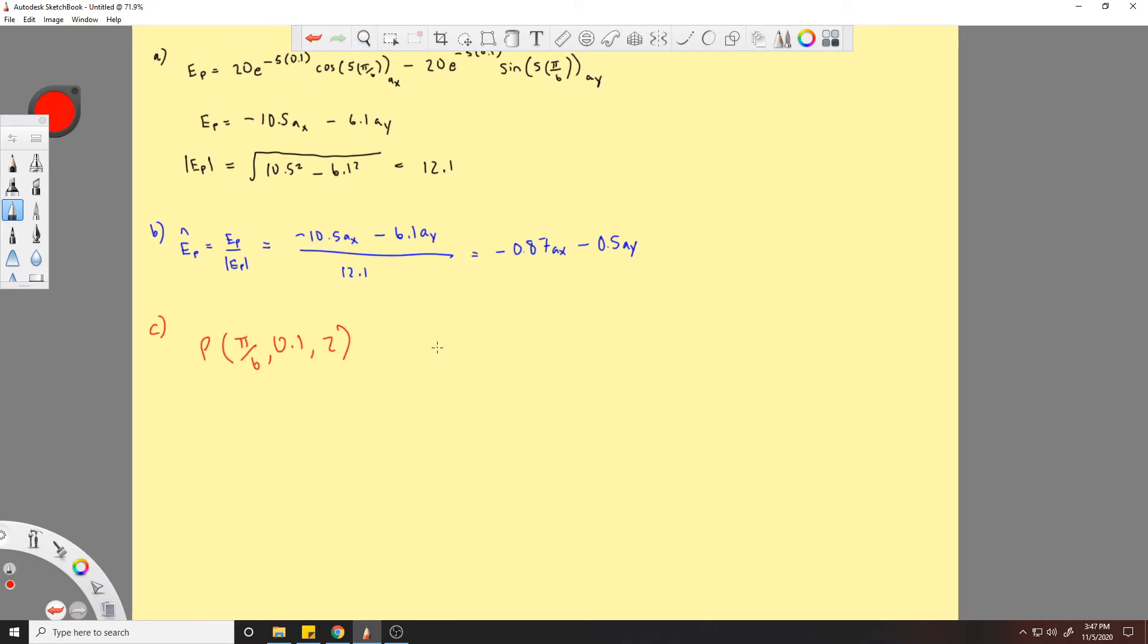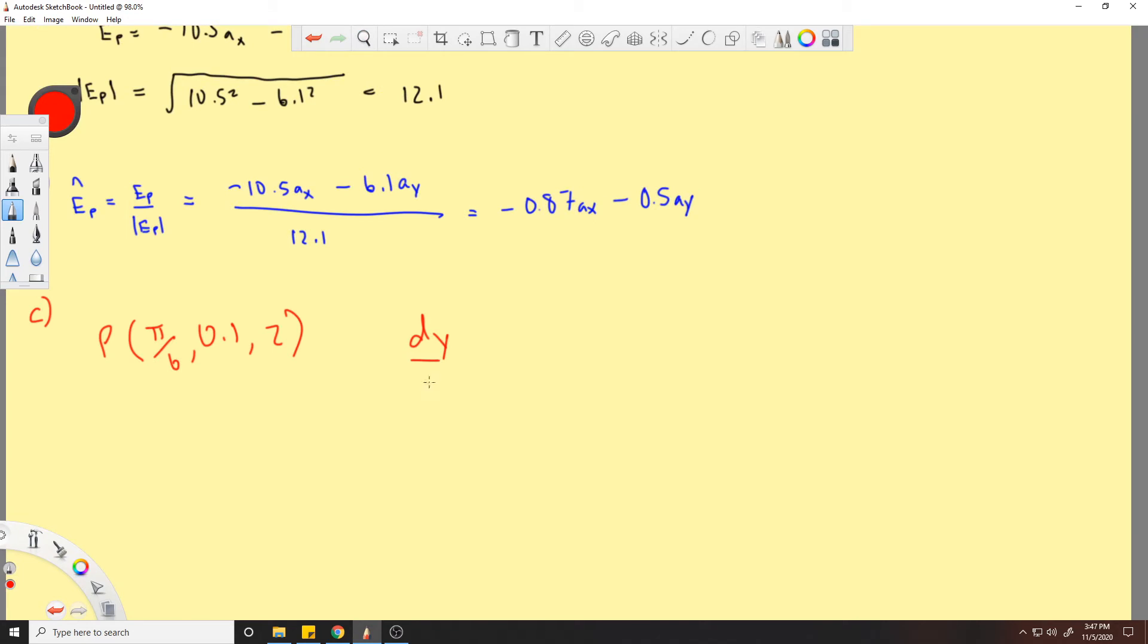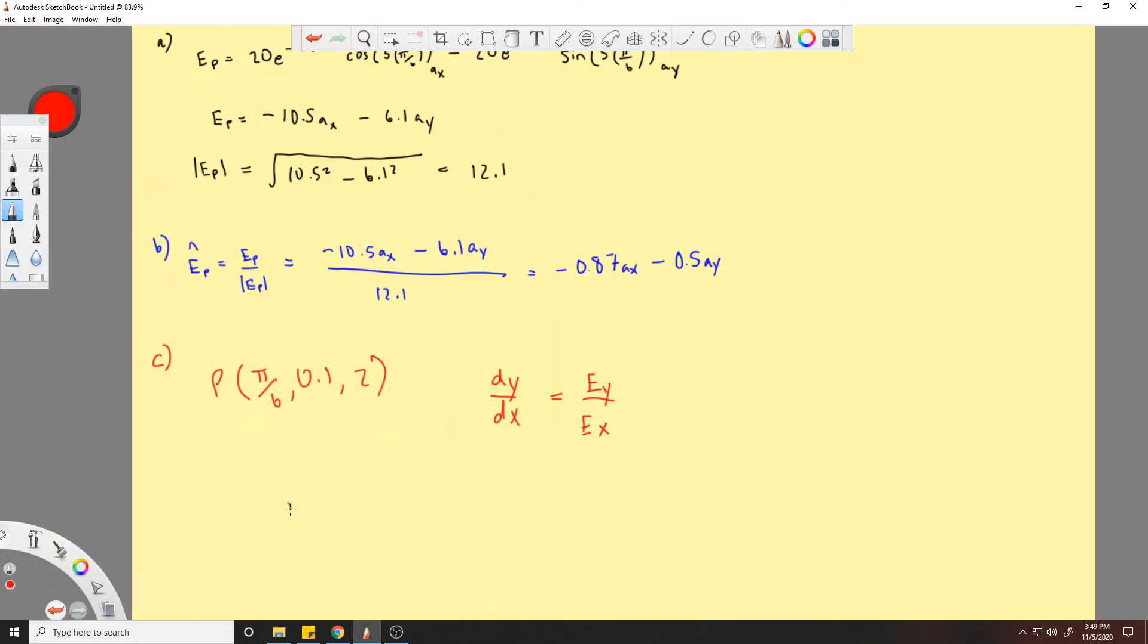So the first thing we do is we can use dy/dx is equal to E_y / E_x. This is what we use when we're looking to find electric field line equations. Okay, so we're just going to plug in the electric field line points.